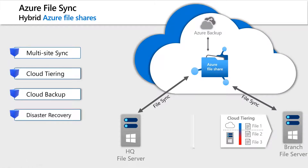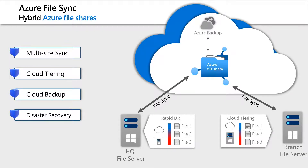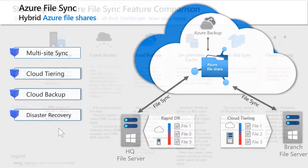At first, your entire namespace comes down. This is just the metadata, so this makes your server accessible and usable very quickly because the users can see all the files. Then, as users access files, they will be recalled and cached locally as required. You can also define policies that drive recall based, for example, on last modified timestamp.